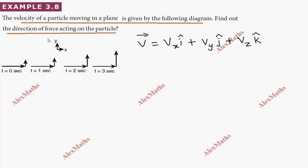Looking at the diagram, on the horizontal axis we have x representing time: 0 seconds, 1 second, 2 seconds, 3 seconds.